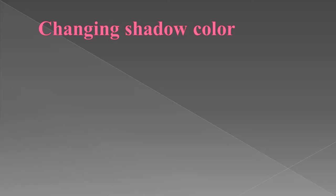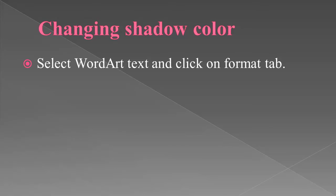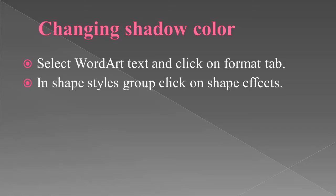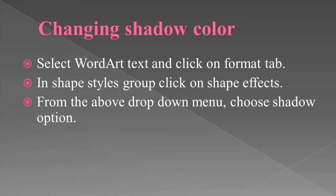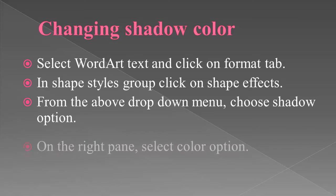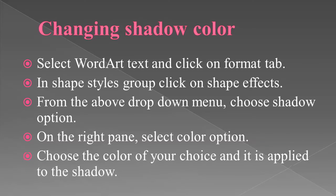Next is changing the shadow color. To change the shadow color, first select the Word Art text and click on the Format tab. In the Shape Styles group, click on Shape Effects. From the drop-down menu, select Shadow as shown in figure 3.10 on your book page number 34. Then choose a shadow option. On the right pane, select the color option. Choose the color of your choice and it is applied to the shadow. You can change the shadow color with the help of these steps.